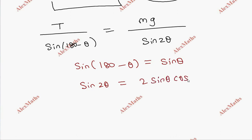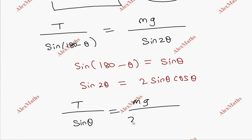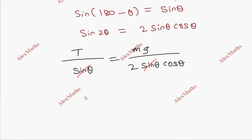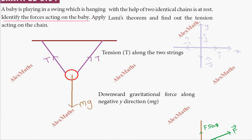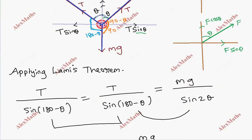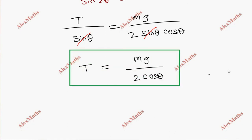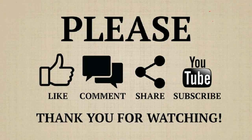Since sin(180 minus theta) equals sin theta in the second quadrant, and sin(2theta) equals 2 sin theta cos theta, we get: T divided by sin theta equals MG divided by 2 sin theta cos theta. The sin theta terms cancel, giving T equals MG divided by 2 cos theta. So the tension acting on each chain is T = mg / (2 cos θ).